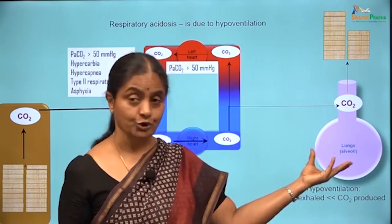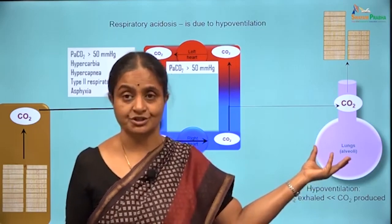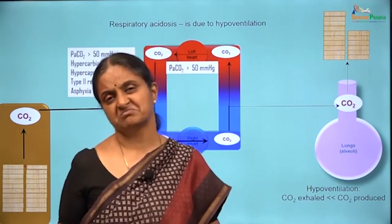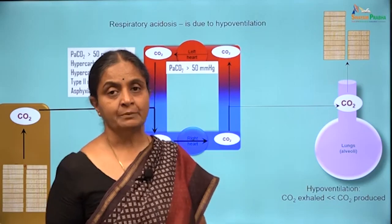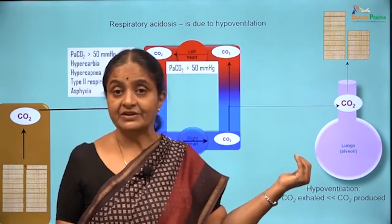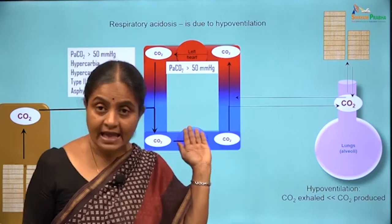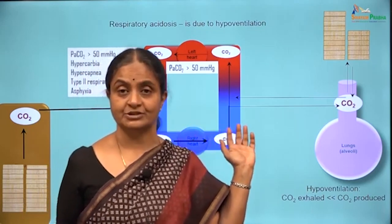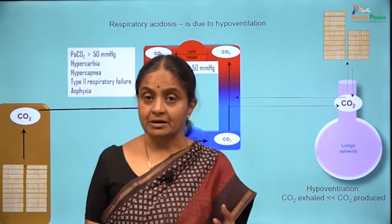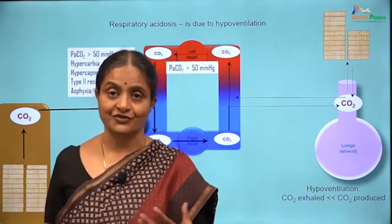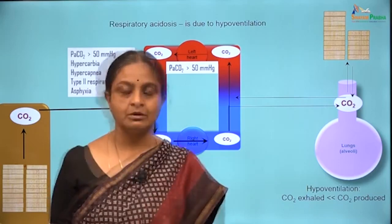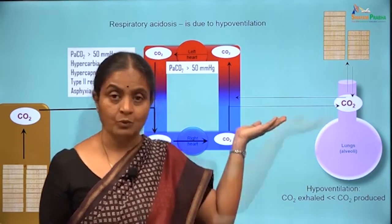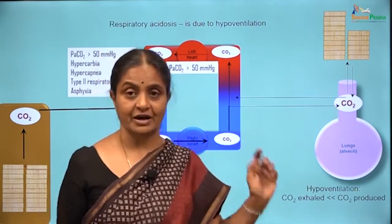Hypoventilation is therefore the cause for respiratory acidosis. Not only that — normally carbon dioxide in the atmosphere is about 0, but if carbon dioxide in the atmosphere is higher, it can enter circulation. That is an important cause of respiratory acidosis, the examples being inhalation of exhaust fumes, vehicle exhaust fumes. We will see two news items at the end of the session where carbon dioxide entry could have occurred.